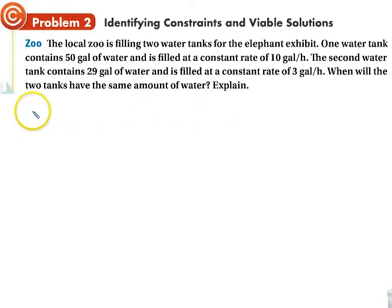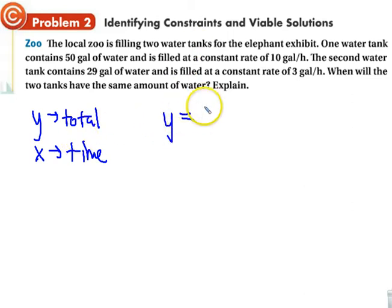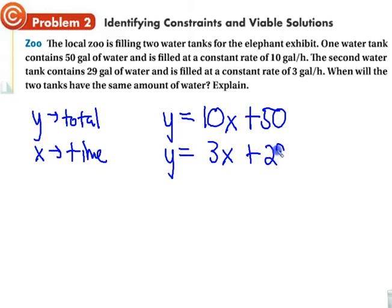So y represents the total water, and x represents the amount of time that we're running the water. For the first tank, it's 10 times the amount of time plus the 50 gallons that was already in there. The second water tank is 3 times x plus the original 29 gallons that were in there. So we have our two equations.